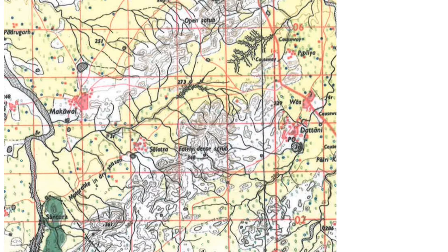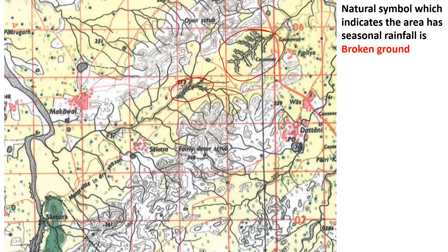In today's class, we will learn that there are some symbols which indicate that an area has seasonal rainfall. Look at this carefully — this is broken ground. Broken ground indicates seasonal rainfall because it results from a kind of erosion called gully erosion. Broken ground forms where there are alternate wet and dry seasons.